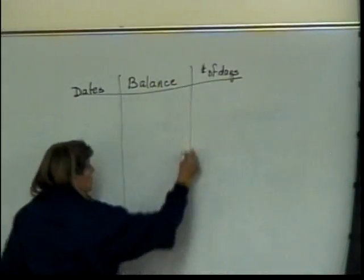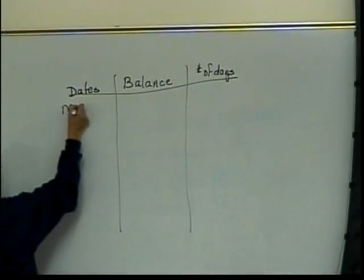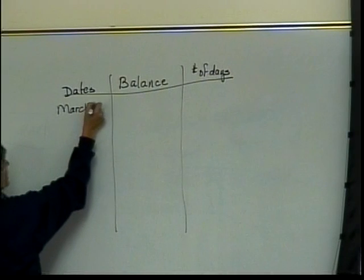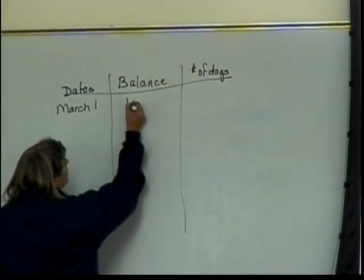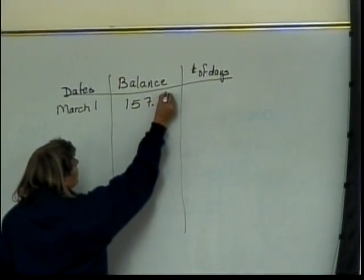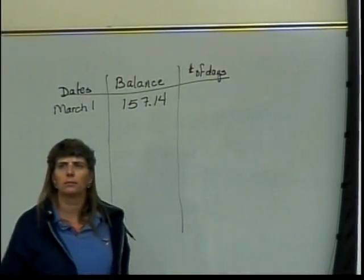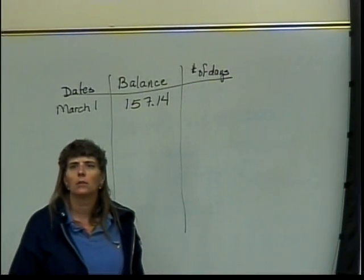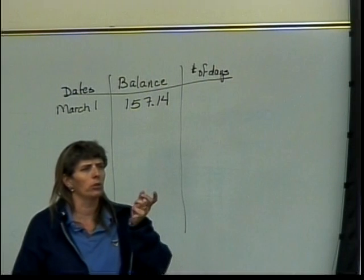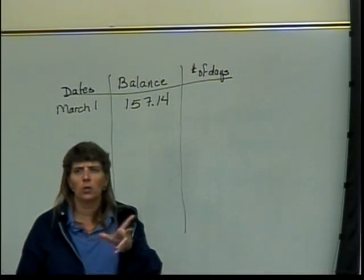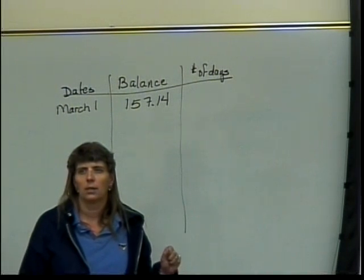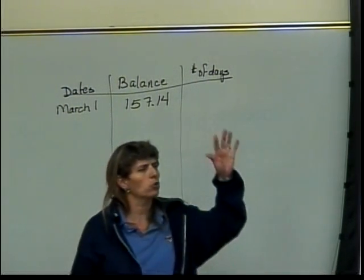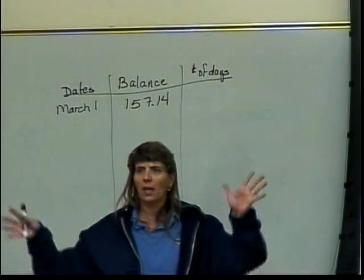We start on March 1. What is Denise's balance on March 1? It's $157.14. What is Denise's balance on March 2? The same. What about March 3? And March 4? Same. So March 1, 2, 3, and 4, the balance is all the same.